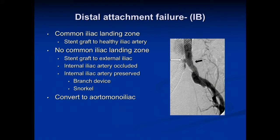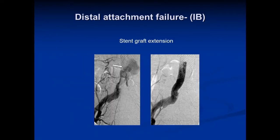Distal attachment failures are usually more straightforward. This is where the iliac landing zone is no longer sealing to the iliac artery. Two situations: one is there is enough common iliac artery to allow extension of your stent graft into that healthy common iliac — that's rather straightforward. If there's not enough common iliac, then you need to bring that stent graft down to the external iliac artery and then somehow occlude the internal with either a coil, or try to preserve it with a branch device or a snorkel. And if all this fails and anatomy is not feasible, you can convert them to an aorto-monoiliac system. Here's an example of a distal attachment leak extended out with a stent graft.